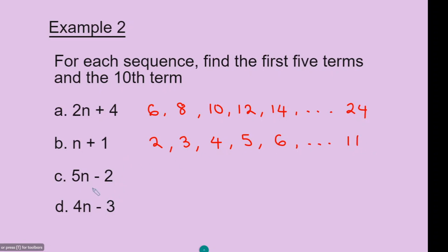Question C. To find the first number in the sequence, n equals 1: 5 multiplied by 1 is 5, take away 2 gives 3. The second number, n equals 2: 5 times 2 is 10, minus 2 is 8. The third number, n equals 3: 5 multiplied by 3 is 15, take away 2 gives 13. The fourth number, n equals 4: 5 times 4 is 20, minus 2 is 18. The fifth number, n equals 5: 5 times 5 is 25, take away 2 gives 23.